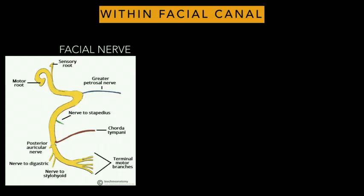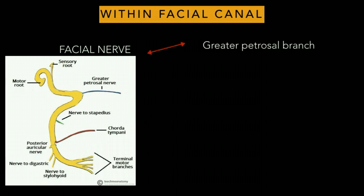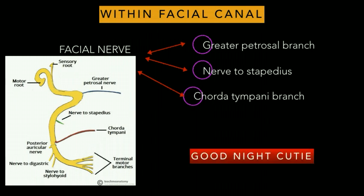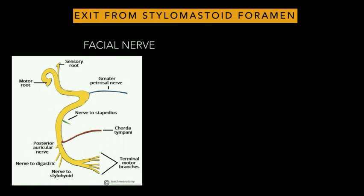Within the facial canal, the nerve gives out three major branches: the greater petrosal branch, the nerve to stapedius, and the chorda tympani branch. To remember these three, take G from greater petrosal, N from nerve to stapedius, and C from chorda tympani. An easy mnemonic for this is 'Good Night Cutie.'